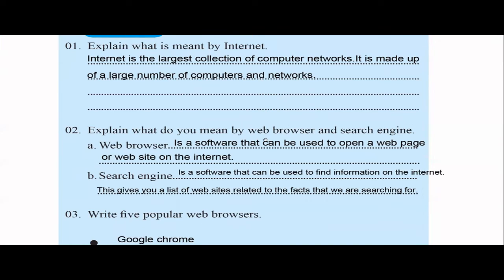Explain what we mean by web browser and search engine. A lot of students have this conflict. A web browser — like Google Chrome, Safari, Opera, Firefox — is used to open a web page or a website on the internet. To browse the internet, we need a web browser. A search engine is a bit different; it's like Google or Bing — software that can be used to find information on the internet. So Google and Google Chrome are two different things.